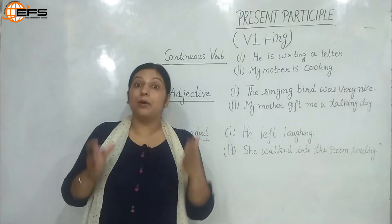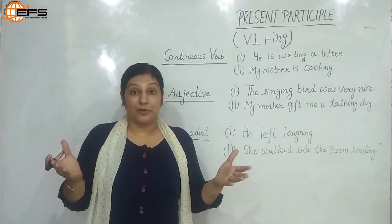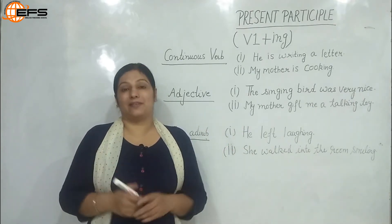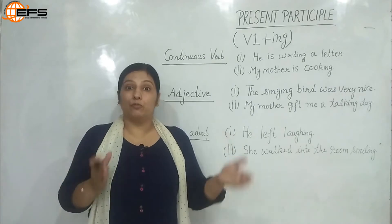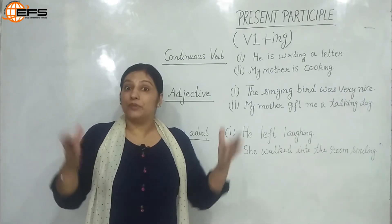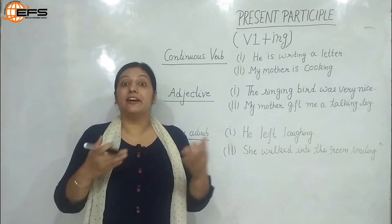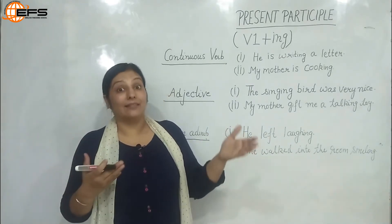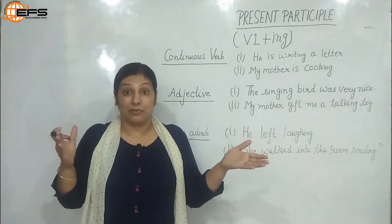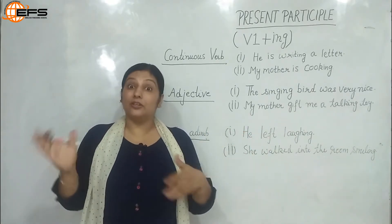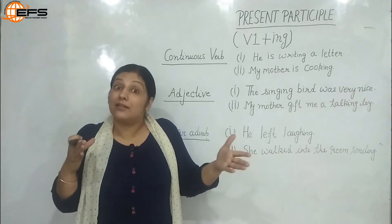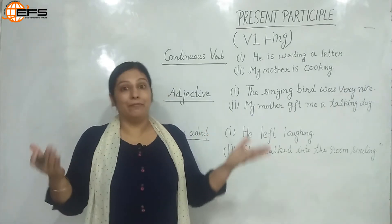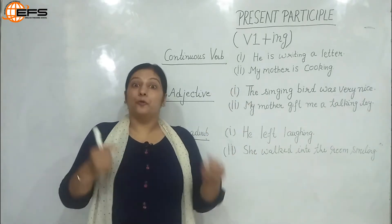There are three participles mainly: present participle, past participle, and perfect participles. When we discuss the forms of a verb, we say the base form is the first form — for example 'run' — then we have the second form, often called the past form, that is 'ran', then the third form which we call past participle. When we add -ing to a verb it becomes present participle.